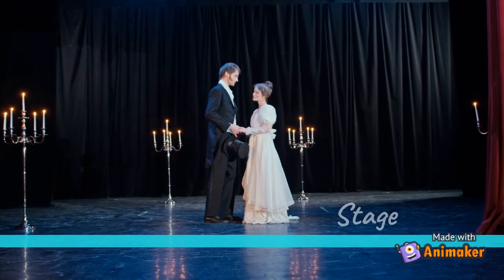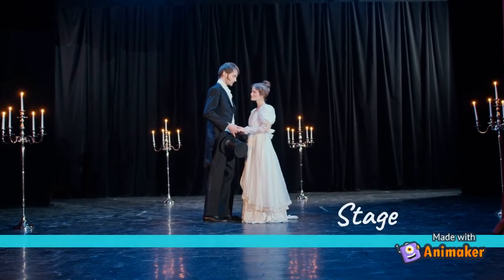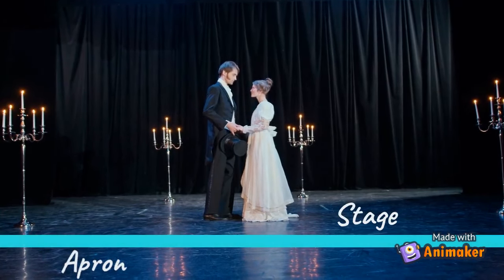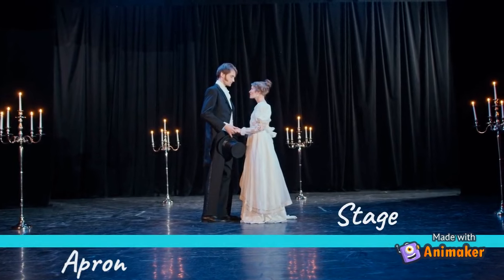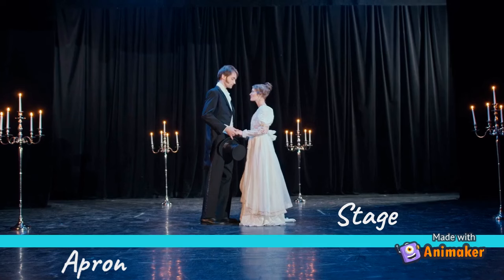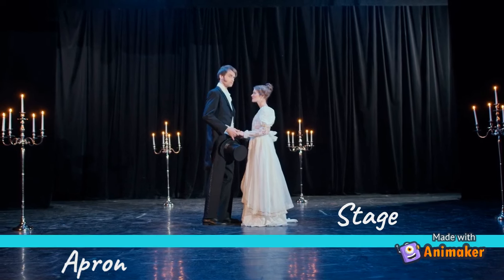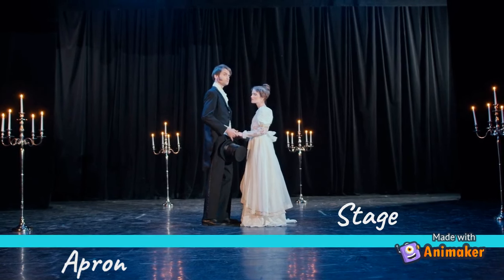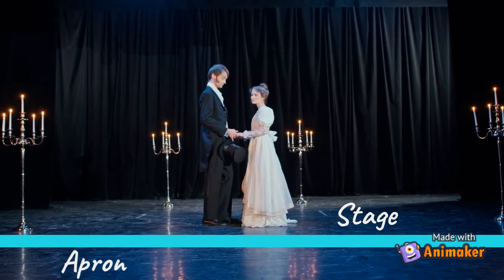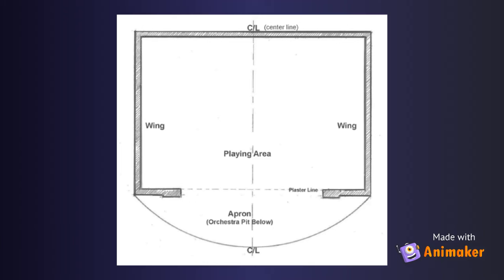Behind the plaster line is the stage space itself, and in front of it is the apron. The apron is the farthest downstage area of a proscenium stage and can be used as additional acting or scenic space. You can see the apron and plaster line in this diagram of a proscenium stage.